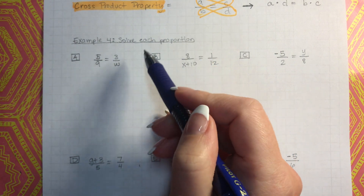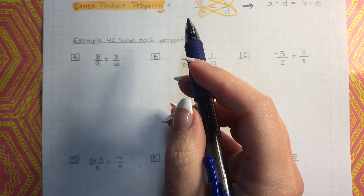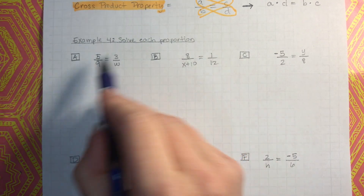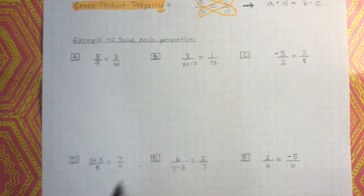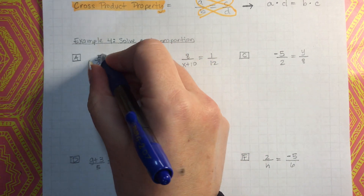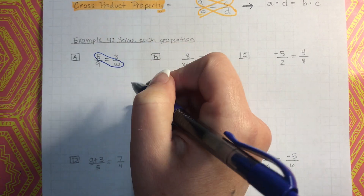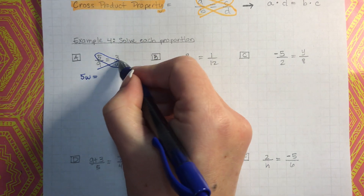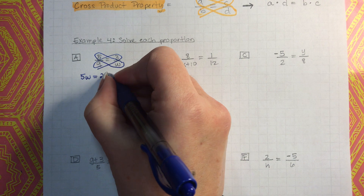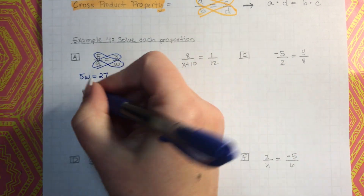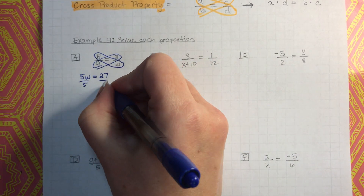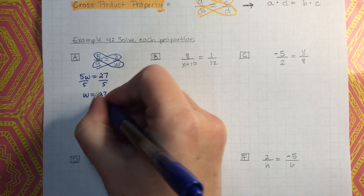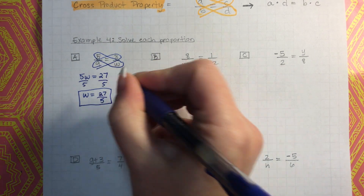You can totally do it that way, where you just multiply both sides by W. But we're also going to learn the cross-products property. So we're going to take 5 times W, which is just 5W, and that's equal to 3 times 9, which is 27. Then we just solve for W — we divide both sides by 5, and we end up with W equals 27 over 5. That is our answer.